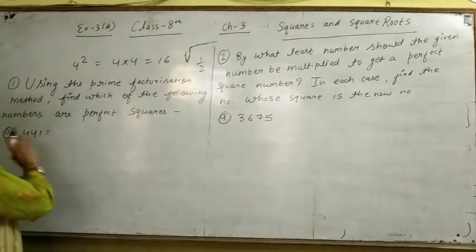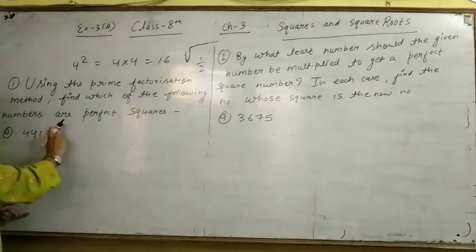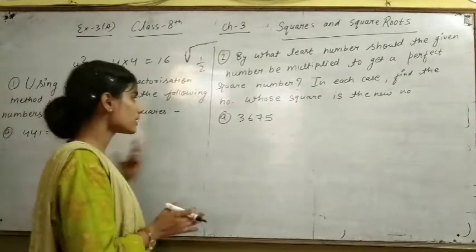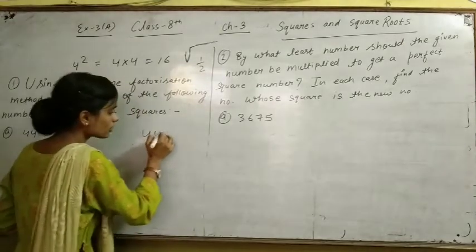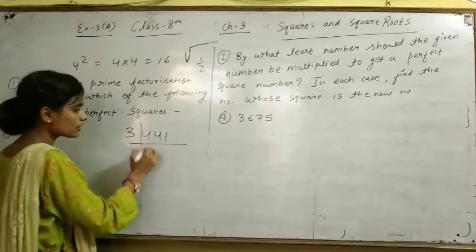Let's discuss the first thing. Using the prime factorization method, find the root of the following numbers which are perfect squares. We have to explain the perfect squares. How to explain the perfect squares?